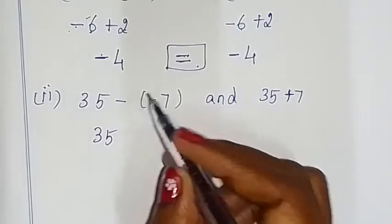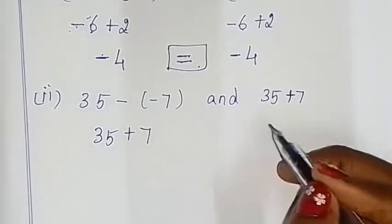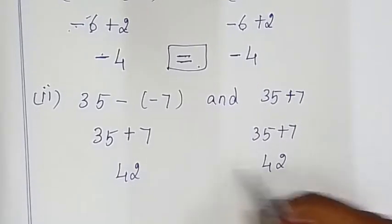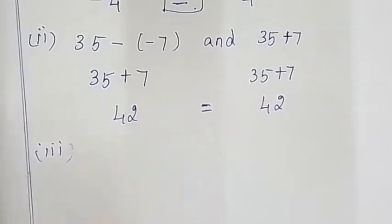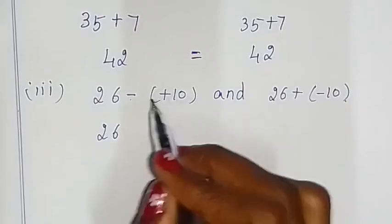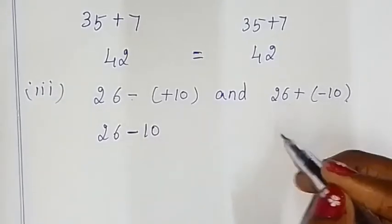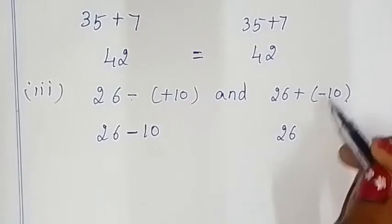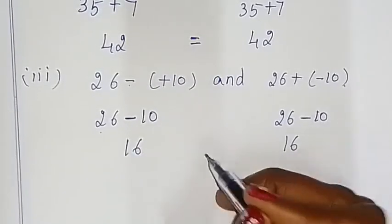Equal to — multiplication rules: 2 minus 1, plus 7, plus 7, 35 plus 7 — so this is 42 and this is also 42, so equal. Now: 26 — 2 symbols, 1 symbol — integer multiplication rules: 1 minus is minus, so 26 minus 10 is 16; here 26 minus 10 is also 16 — equal.